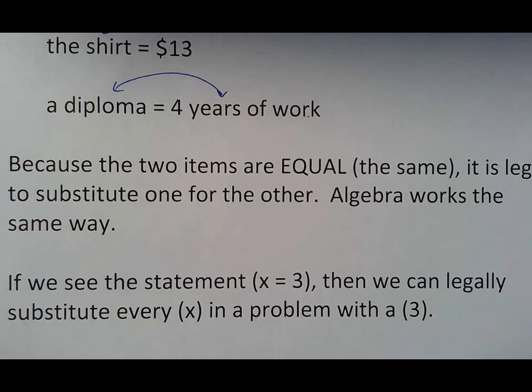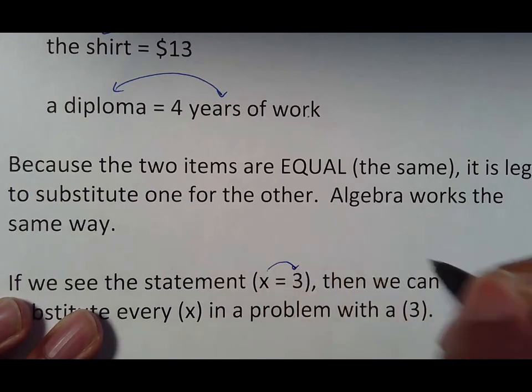If you see the statement x equals three, it means that x has the same value as three. I know we want to say x equals three, because that's what you're going for. But what it's really saying is that this variable x, because it's called a variable, has the same value as the number three. So what you can do, everywhere you see an x, you could put a three in its place.